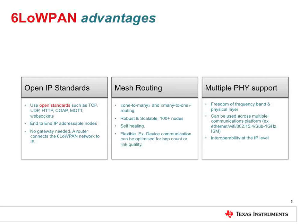Thirdly, 6LowPAN supports multiple physical layers as well as frequency bands, and interoperability is only enforced at the IP layer. This means that both sub-1GHz and 2.4GHz hardware solutions are possible.